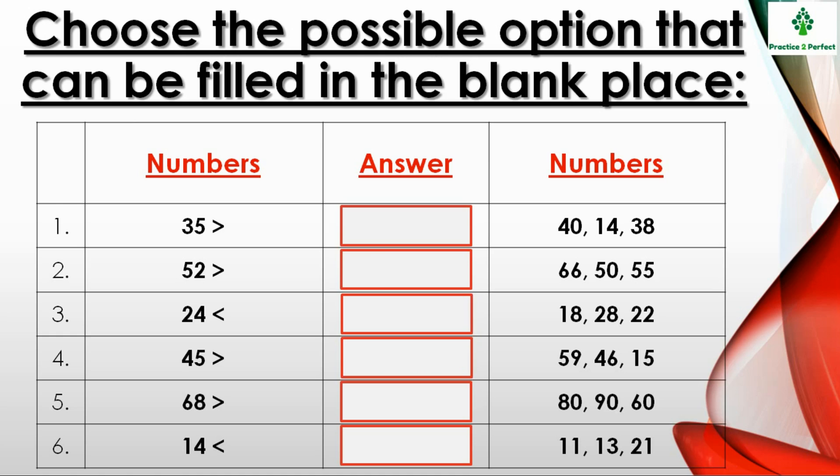Now this is also a comparison question. Let me explain you with the first example. In the first column one number is given along with a comparison sign and in the third column three numbers are given. So you have to check which number from the third column will fit in the answer section. Now if you see the number given here is 35 is greater than, the three numbers given are 40, 14, and 38.